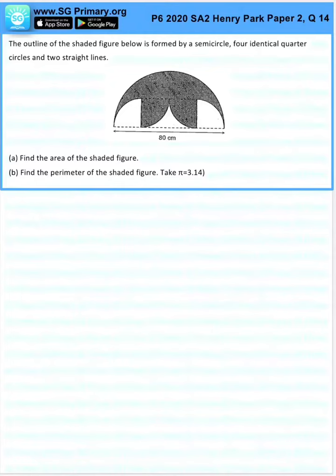Question 14. The outline of the shaded figure below is formed by a semicircle, four identical quarter circles, and two straight lines. Find the area of the shaded figure.